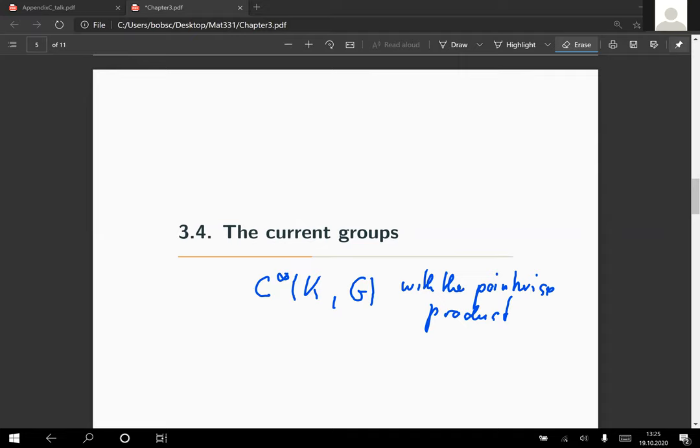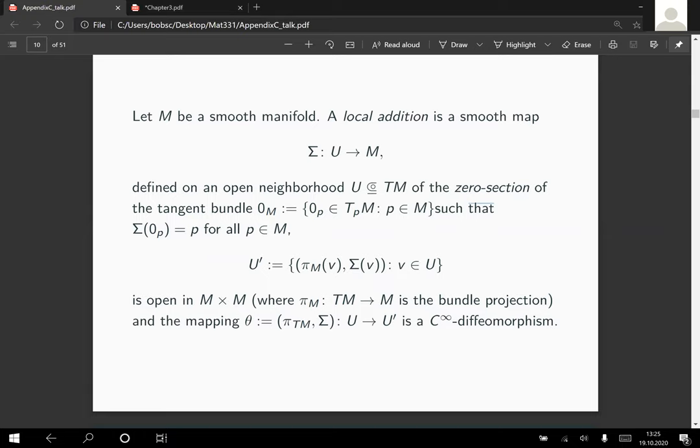Let's recall what is a local addition. Basically, that's a smooth map on the neighborhood of the zero section, which maps zero elements lying over a point back to the point. If we connect it together with bundle projection, then we get a smooth diffeomorphism from our open neighborhood of the zero section to some open neighborhood of the diagonal in the Cartesian product of the target manifold with itself.